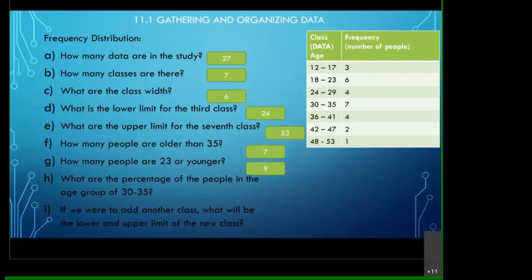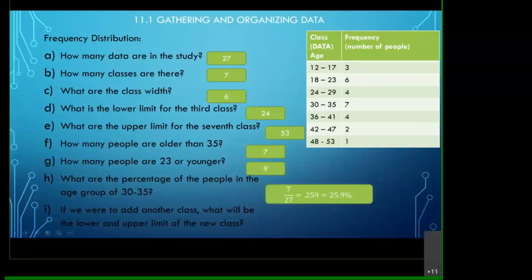What is the percentage of people in the age group of 30 to 35? To find the percentage, we take the number of people in that group divided by the total number of people. We have seven people divided by 27, which gives us 0.259. Then you convert by multiplying by 100, or move the decimal two places to the right.